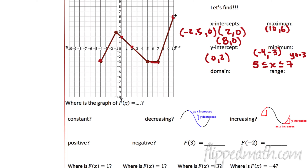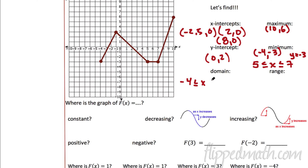The domain — all the x values. Where are the x values? It starts here at negative 4. The graph goes all the way over to this part right here, so these are the x values that get used: from negative 4 to 10. The way we write that: negative 4 is less than or equal to x, less than or equal to 10. This means x has to be bigger than negative 4 but less than 10 — we use a compound inequality.